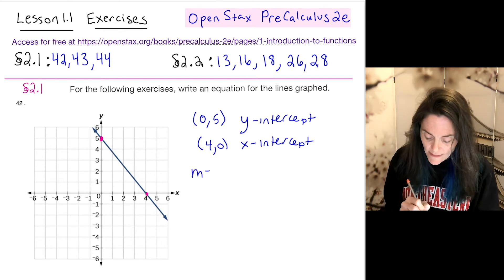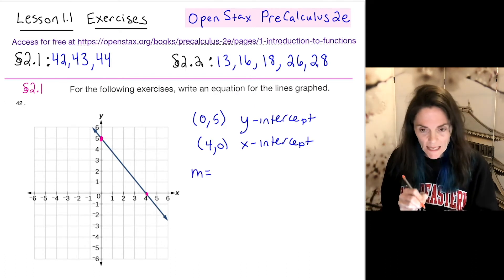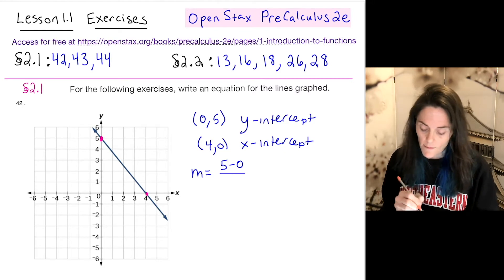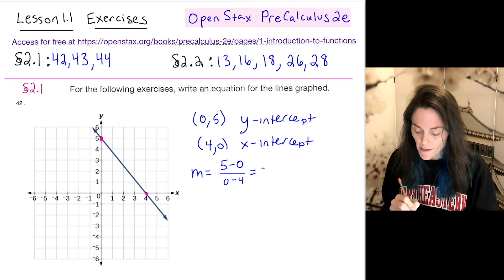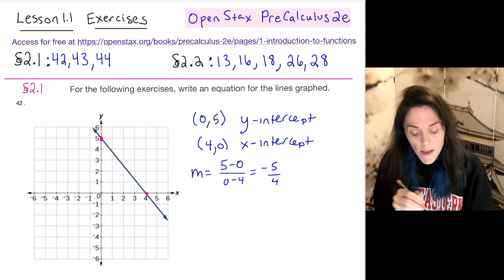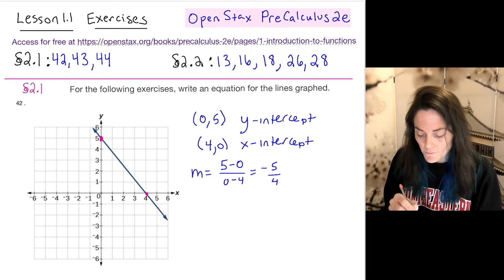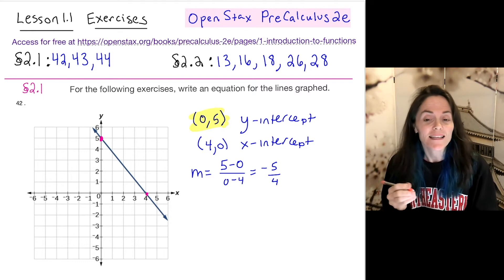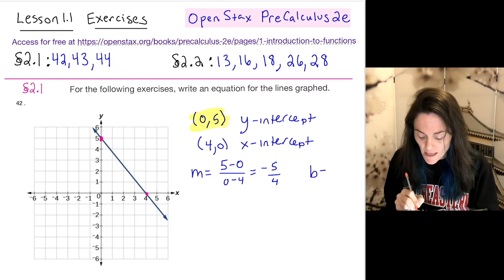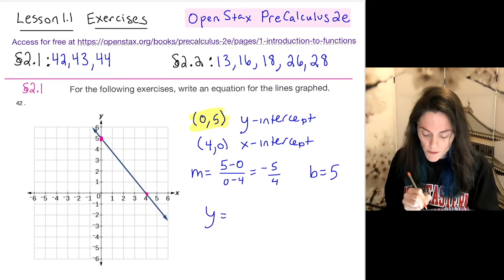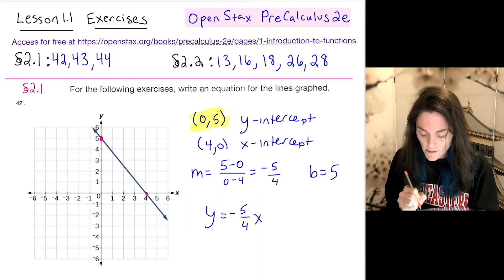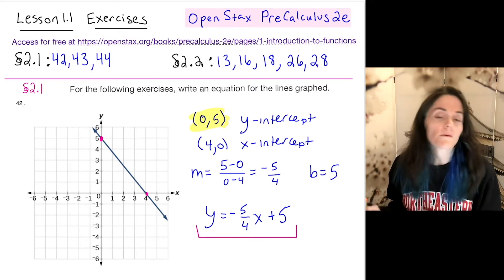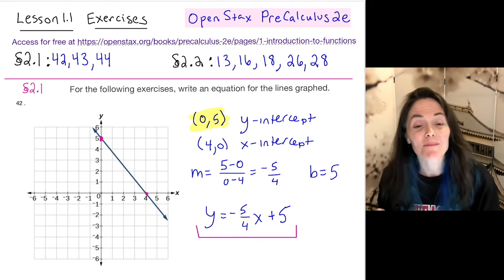And so the slope, which is change in y over change in x, we can take 5 minus 0 divided by 0 minus 4. And we see we have negative 5 over 4 as our slope. Well, because we're given the b information in the mx plus b form of an equation of a line, we could just write it down. So we have the slope and the intercept, b equals 5. So we have y equals minus 5 over 4, x plus 5. This is my answer. This is one answer. You could also write in point slope form using a different point on the line, but this is perfectly fine.